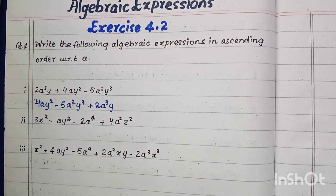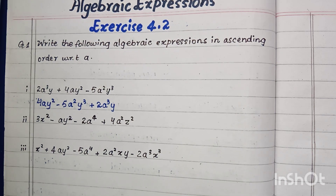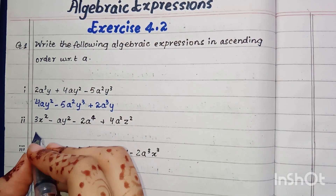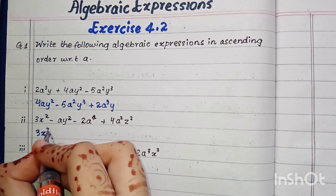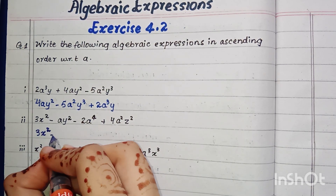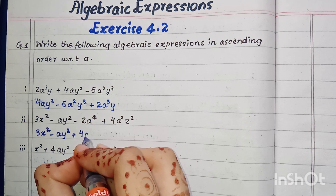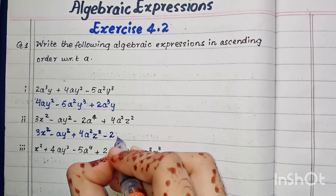In part two, the smallest power of the variable a is zero, because zero has no value shown. The term 3x² has the smallest power of variable a — when the power of a variable is zero, that variable is not shown. So we write 3x² first, then minus y², then plus 4a²z², and then minus 2a⁴.